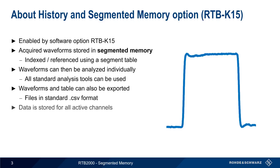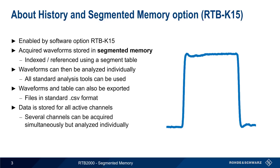History mode stores data for all active channels, which means that several channels can be acquired simultaneously but can be analyzed separately. Before we walk through how to do this on the RTB, let's first pause for a moment to explain what we mean by segmented memory.